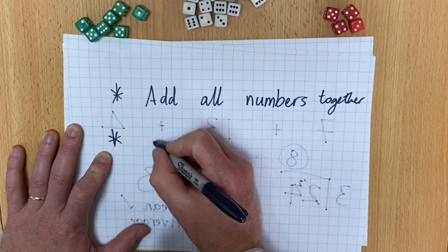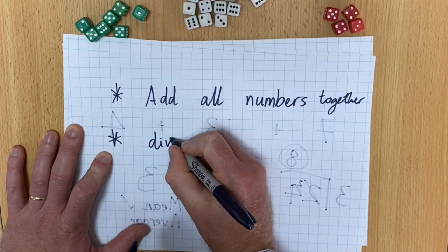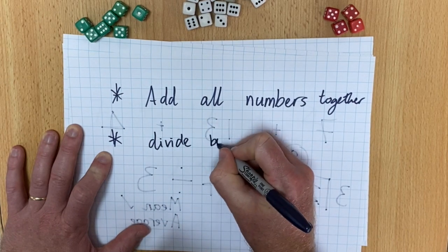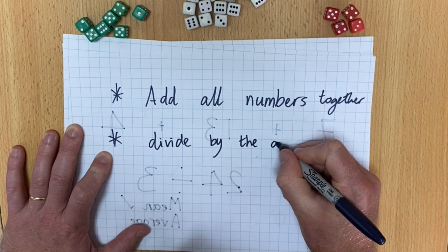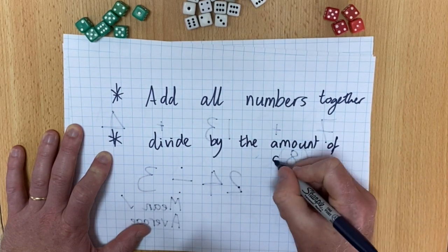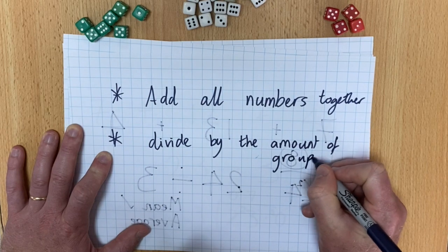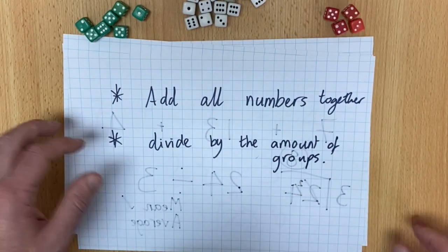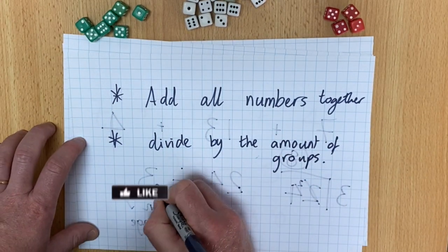Then you divide it by the amount of groups. And that will give you the mean.